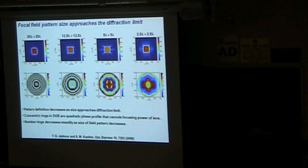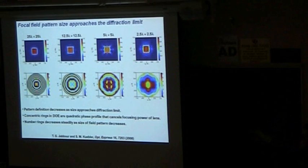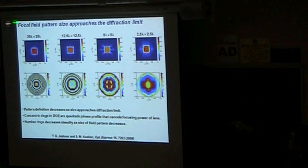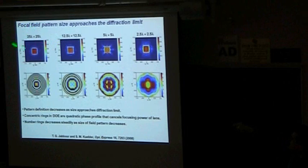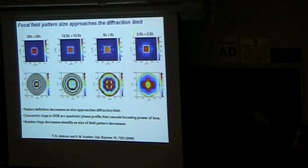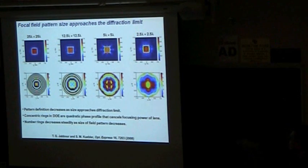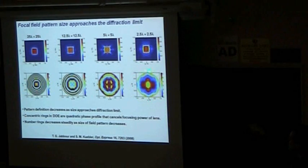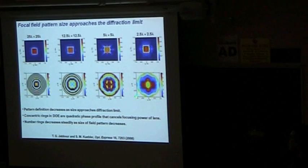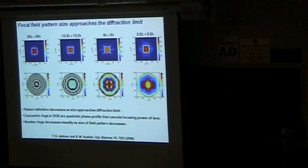The DOE profile for a 25-by-25-lambda square flat-top shows many concentric rings with a four-fold symmetric inner pattern matching the desired square beam symmetry — analogous to how a three-fold symmetric crystal gives a three-fold diffraction pattern. The rings correspond to phase rollovers from 0 to 2pi, effectively working against the focusing power of the objective. As the target beam size decreases toward the diffraction limit, the number of rings decreases, showing a progression from 25-lambda down to 2.5-lambda squared patterns.